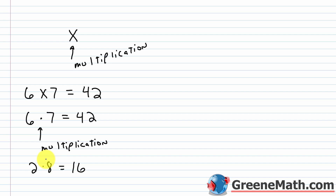You might ask yourself, why do we go back and forth between these symbols? Well, as you get higher in math, you start working with variables, and the × symbol will get confused with the variable x, which is very common in algebra. So we have to switch to something else so that it's crystal clear what we want you to do.